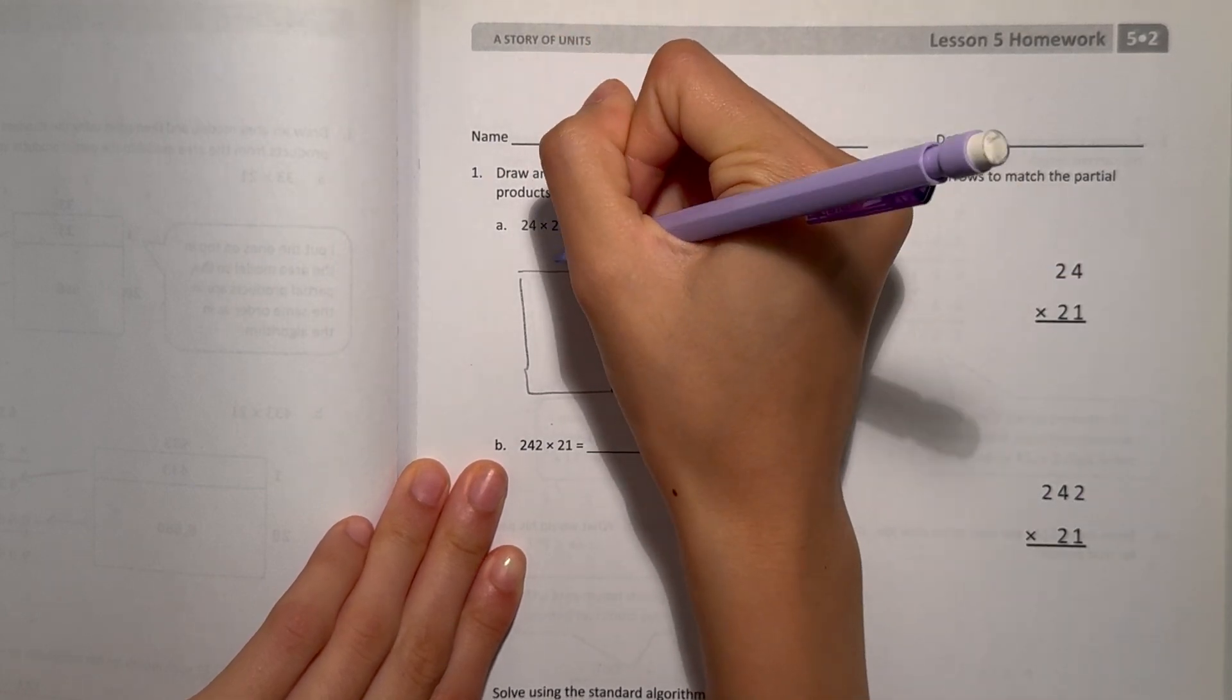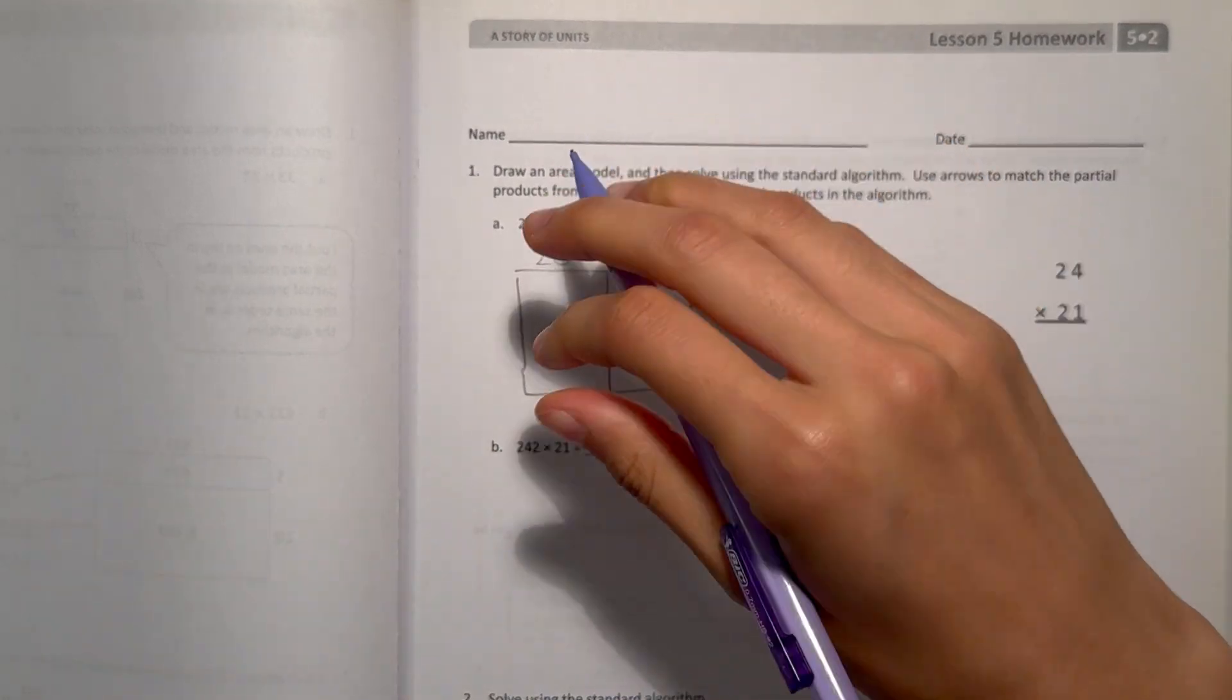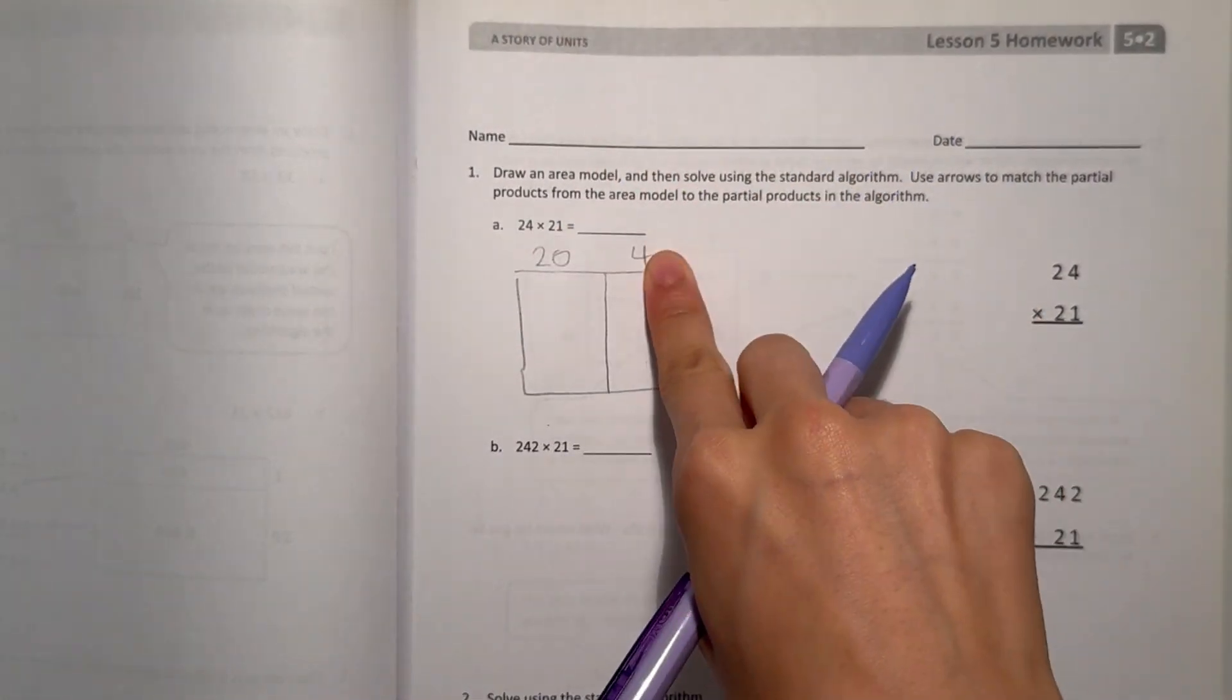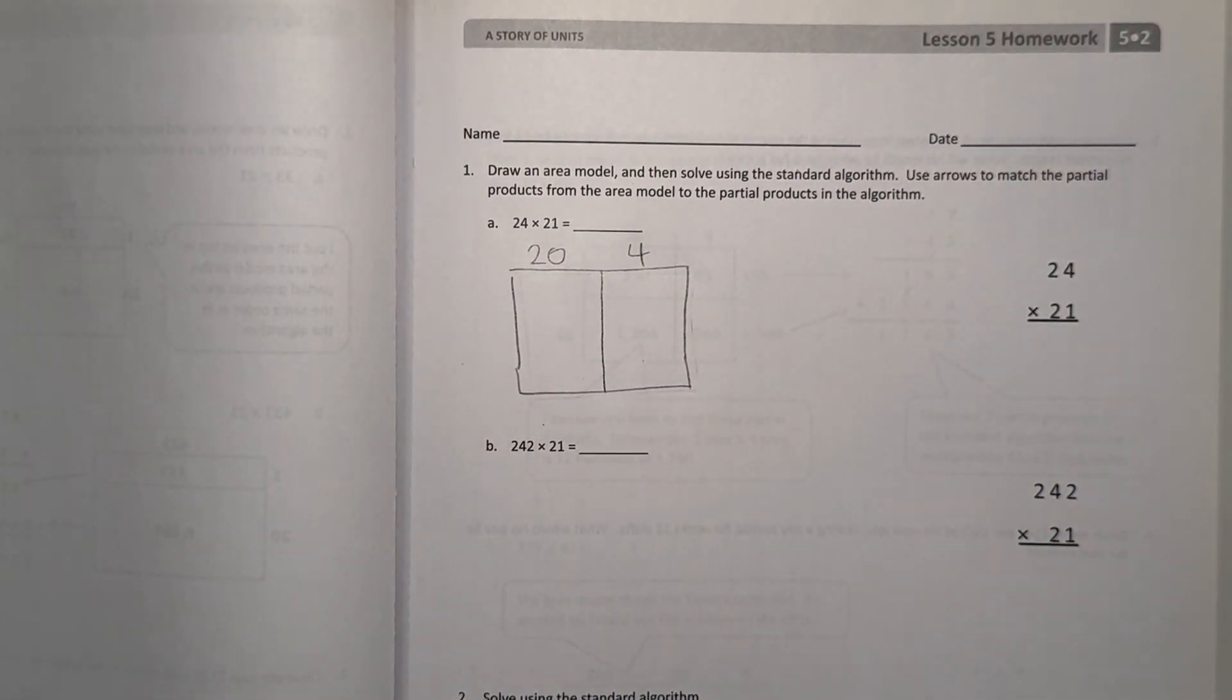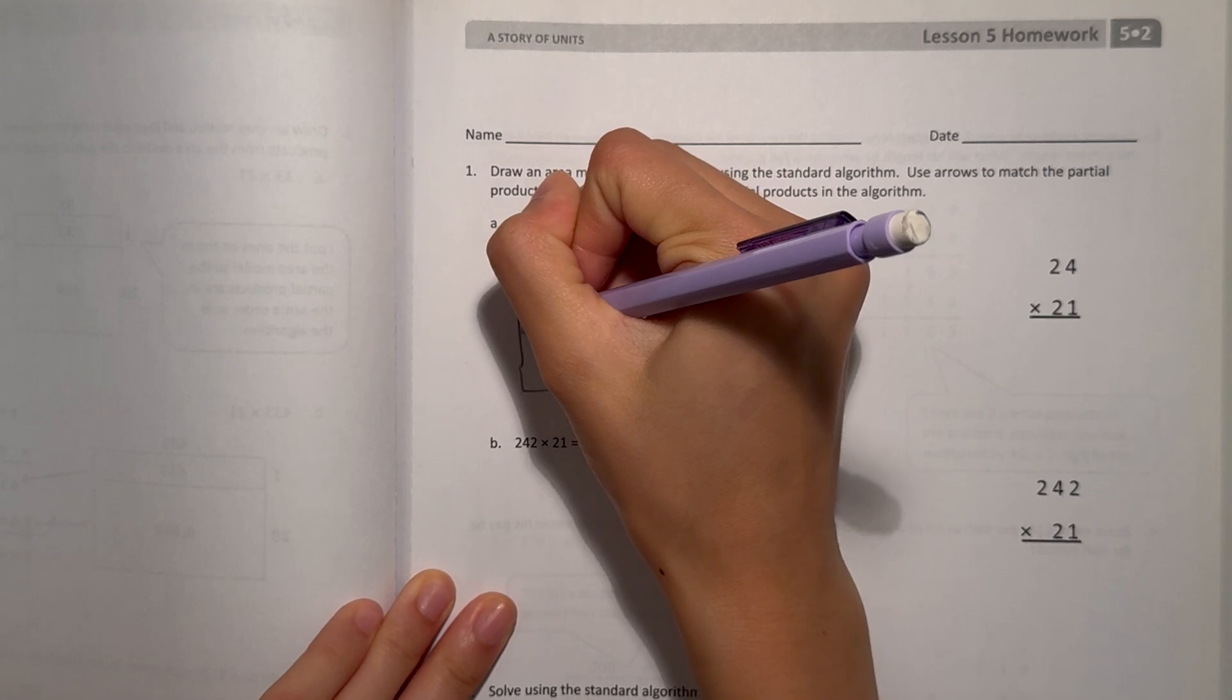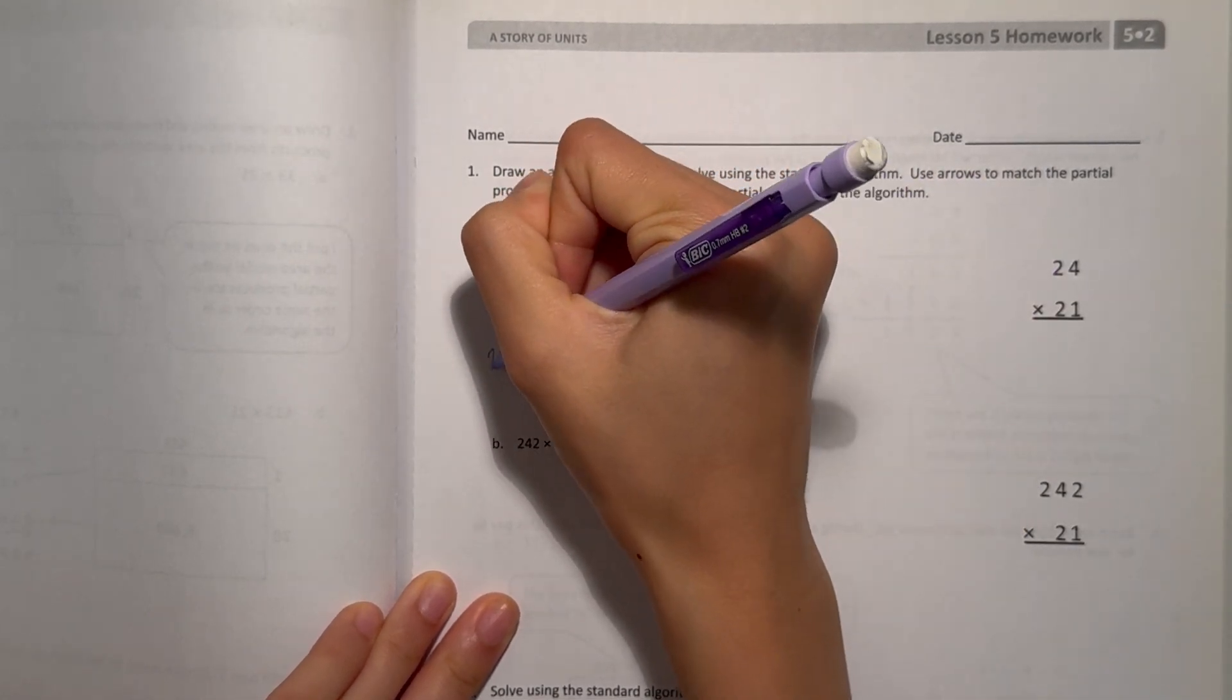So 24, we have to split it up into 20 and 4. And it's very important that you set it up like this, not 24. You have to set it up like 20 and 4. And now for 21, we split this in half, and it goes 20 and 1.